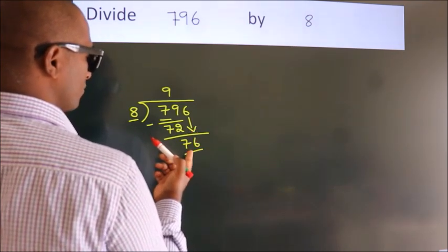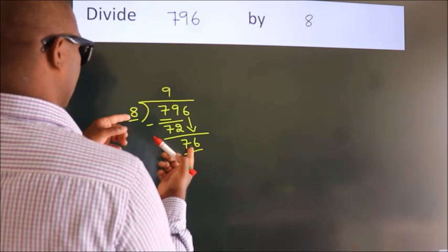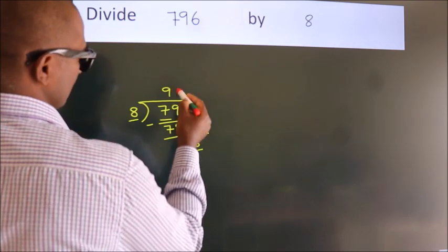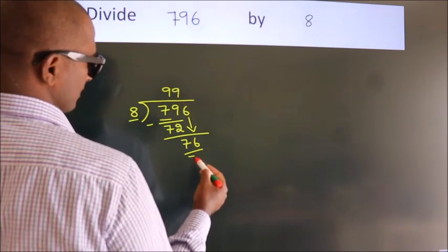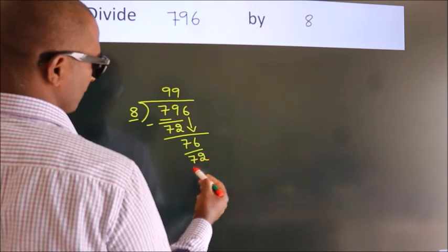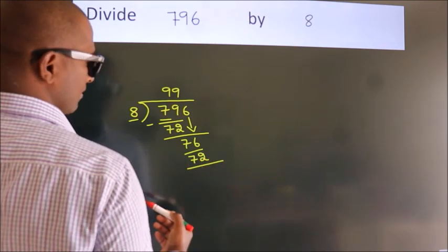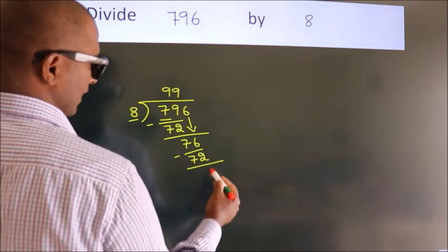A number close to 76 in the 8 table is 8 nines, 72. Now we subtract. We get 4.